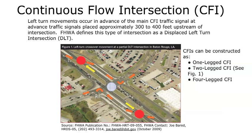A continuous flow intersection is one where the left-turn movement occurs in advance of the main CFI traffic signal. The advanced traffic signal is placed approximately 300 to 400 feet upstream of the intersection. In Figure 1, the advanced traffic signal is shown with a red dot and the main CFI traffic signal is shown with a white dot and hatching. What the CFI is doing is reducing the number of phases at the center traffic signal, which I'll demonstrate in the following slide, to reduce overall delay time.